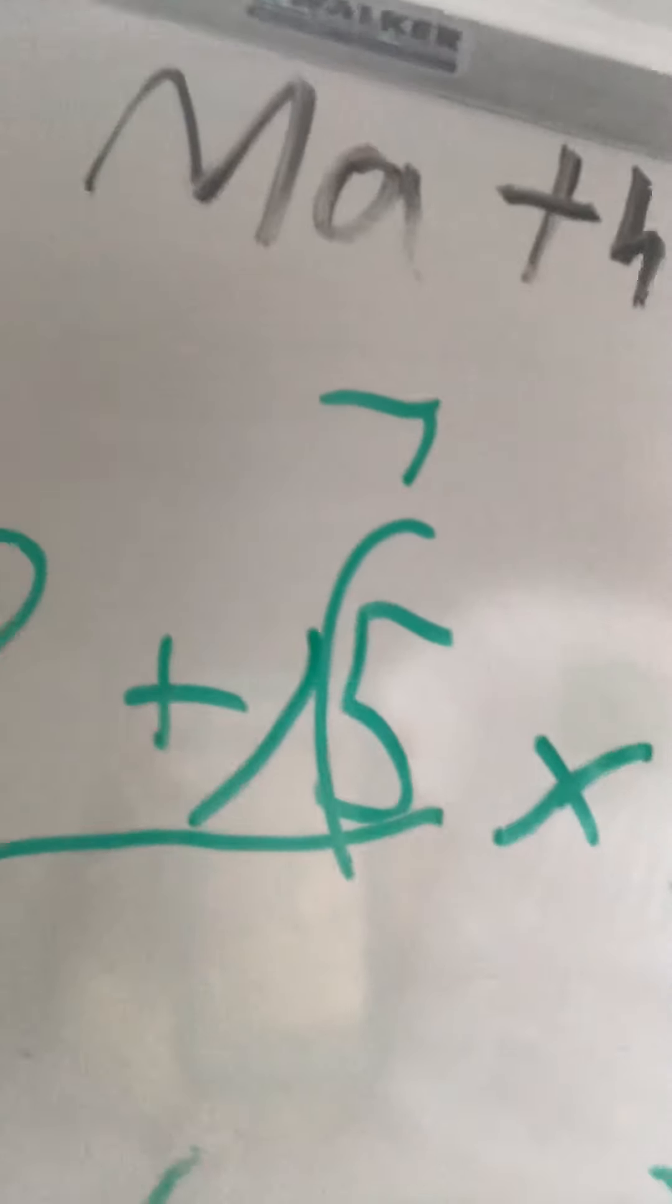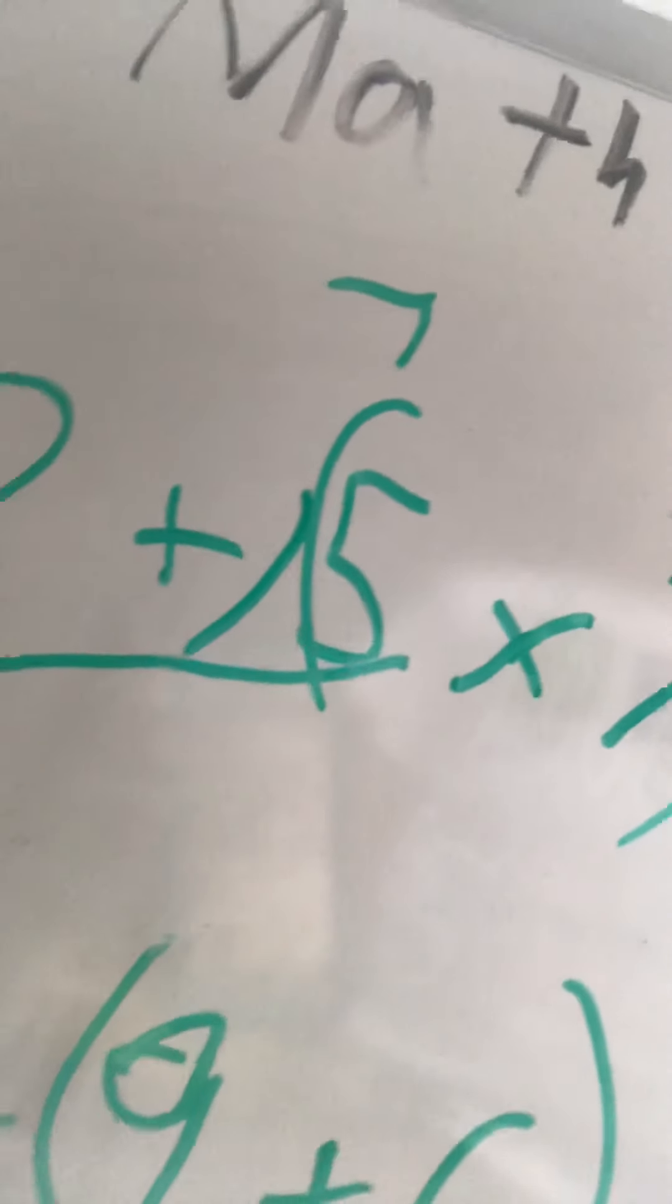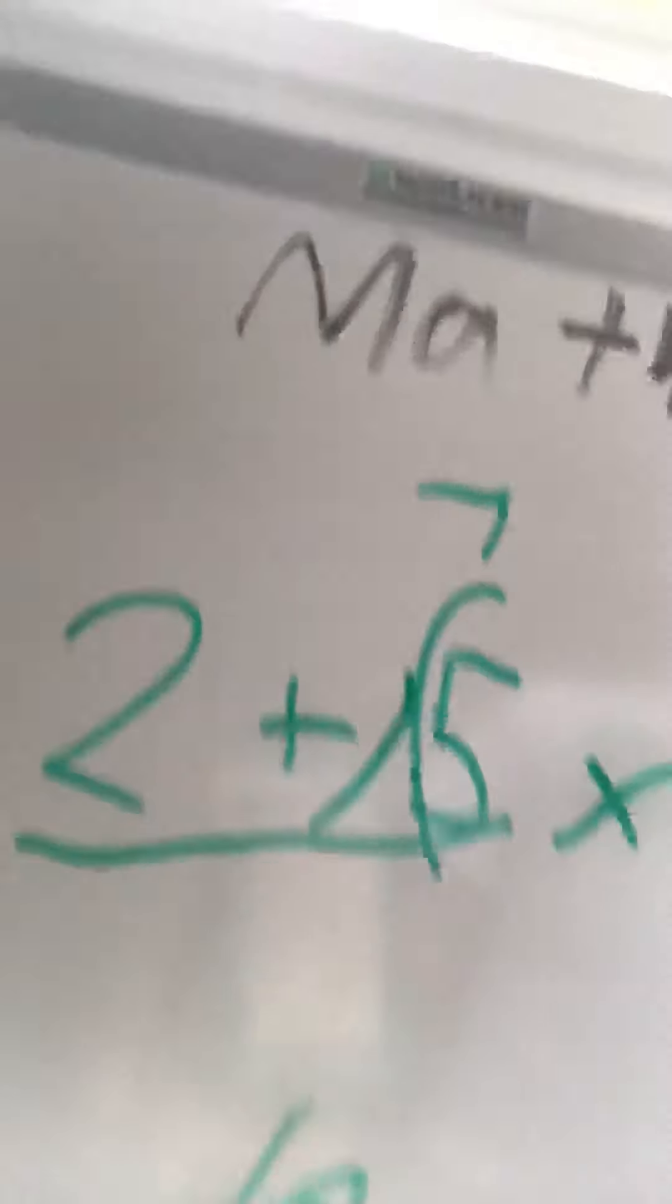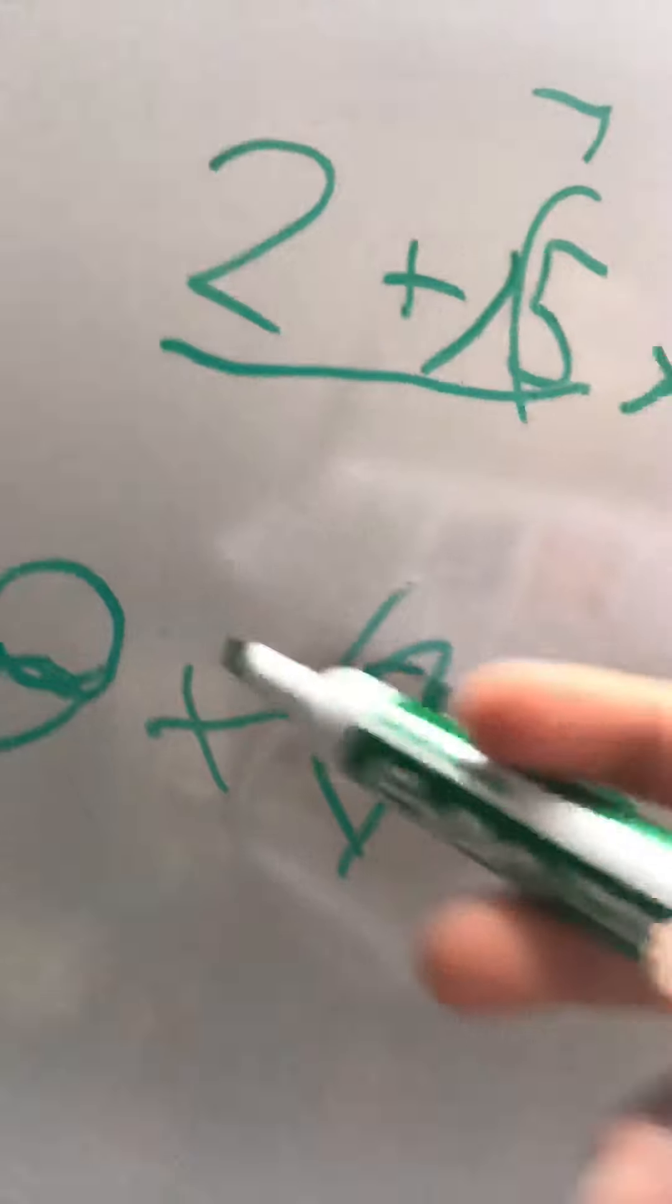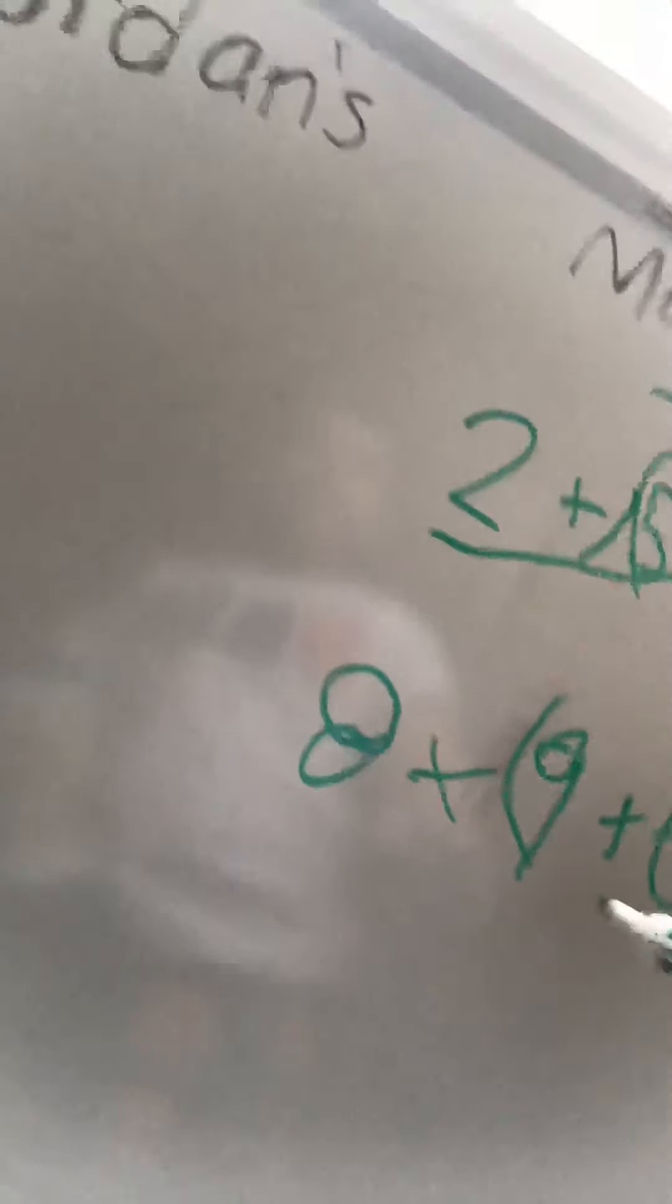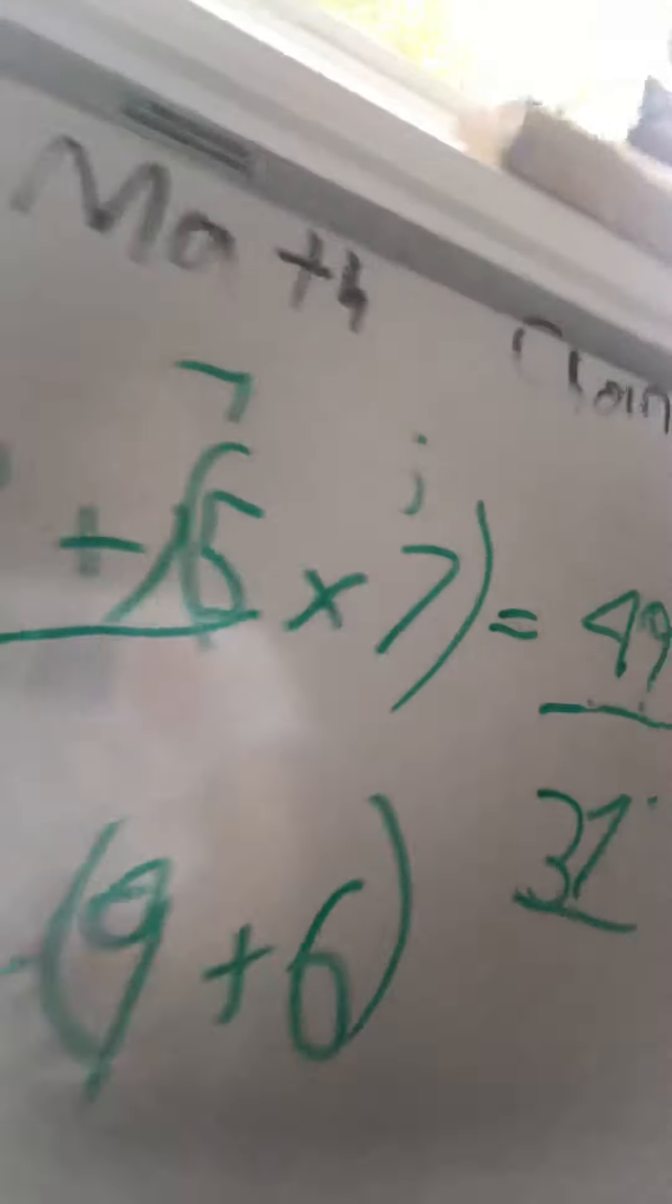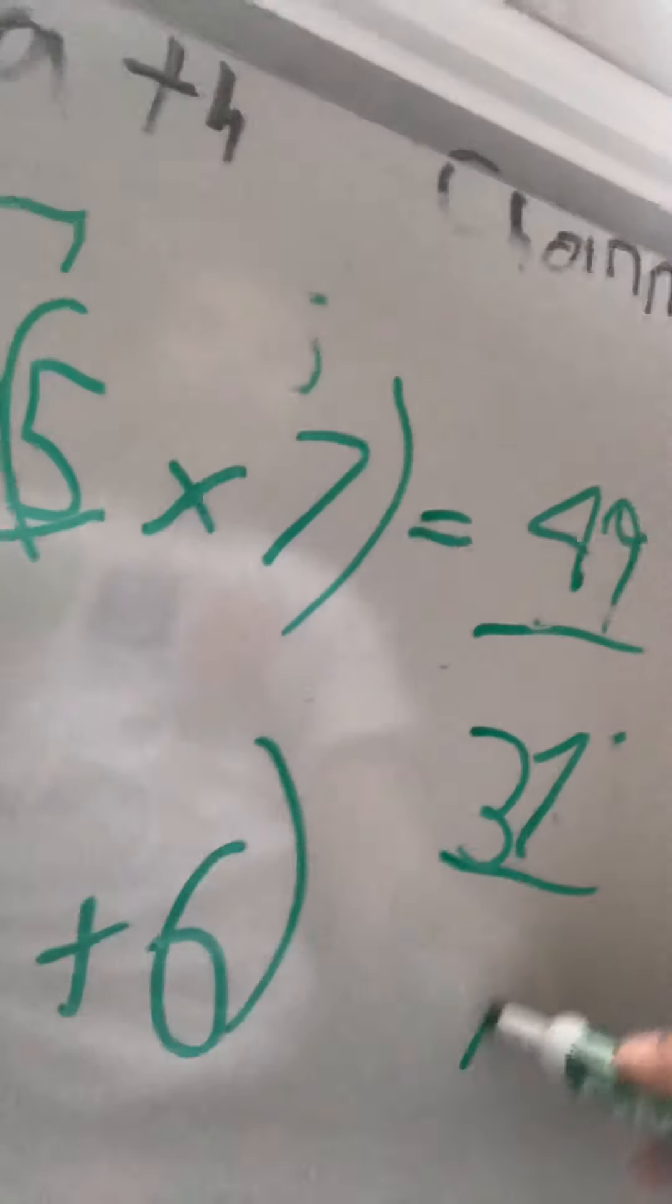Okay, next one. This one is going to be very easy, so you don't have to worry about it. We could do 8 times 9 plus 6. 8 times 9 is 72, plus 6 is 78.